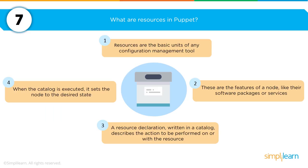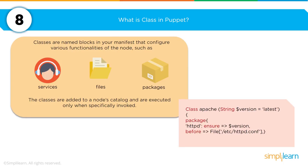What are the resources in Puppet? Fundamentally there are four: resources are the basic units of any configuration management tool, they are the features of the nodes, they are the written catalog, and the execution of the catalog on a node.